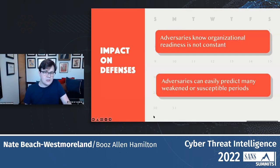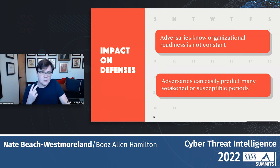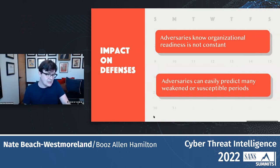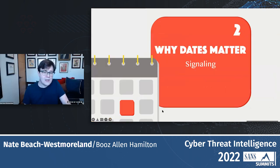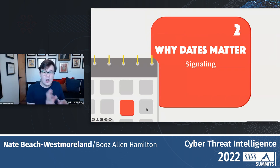So, what have we learned so far? One, adversaries know organizational readiness is not constant — they may plan to take advantage of times of weakness. Two, adversaries can predict many common periods when targets are weakened or susceptible, like when staff are going to be out of office or when they are expecting to receive certain emails, attachments, and links. The other reason adversaries care about dates is for signaling — adversaries can convey meaning of some sort to target audiences by choosing to attack on certain dates.